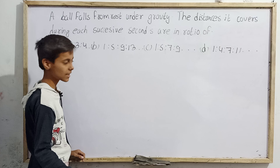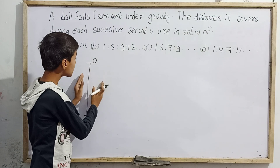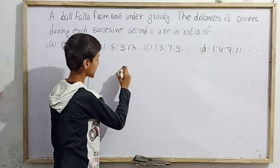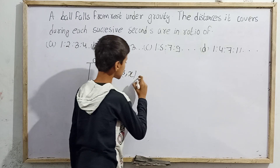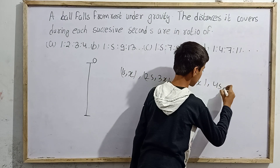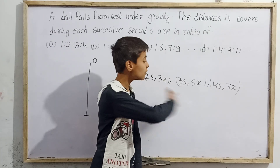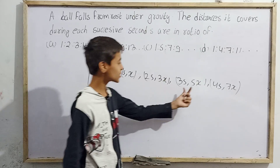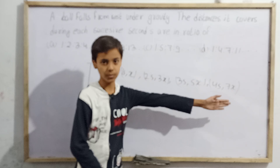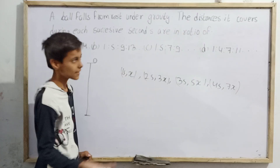Galileo's trick tells us: if a particle is under the action of gravity and starts falling, and in the first second it covers x distance, then in the second second it covers 3x, in the third second 5x, in the fourth second 7x, and so on. The distances per second follow the odd natural numbers: 1, 3, 5, 7, 9, 11, 13, 15... and so on to infinity.